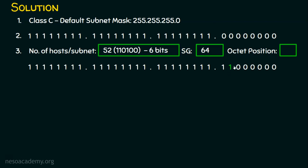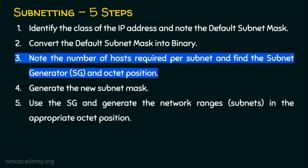Where is this subnet generator occurring? Not in the first, second, or third octet — it is in the fourth octet. So the octet position is 4. Step number three is also complete.